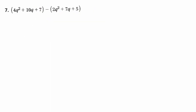Subtracting polynomials has a lot more potential for mistakes. You can do it mentally — 4 minus 2 is 2, giving 2q². Then 10q minus 7q is a positive 3q, not 17q. And 7 minus 5 is a positive 2. My preferred method is to change the sign on everything in the parentheses when subtracting a polynomial — either way you get the same result.